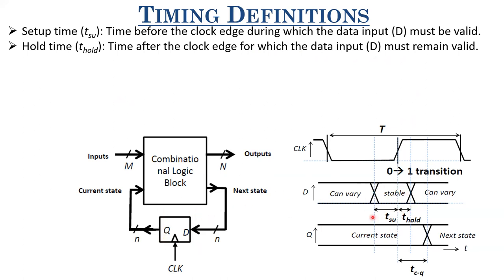Each register is characterized by setup time and hold time. T_hold is the time after the clock edge for which the data input must remain valid and must not change or toggle. You should remember that each register has a setup time — the time before the clock edge when your input must remain stable — and a hold time, the time after the clock edge for which data must remain valid. Otherwise, you will sample something wrong at the output and there will be setup time or hold time violations.